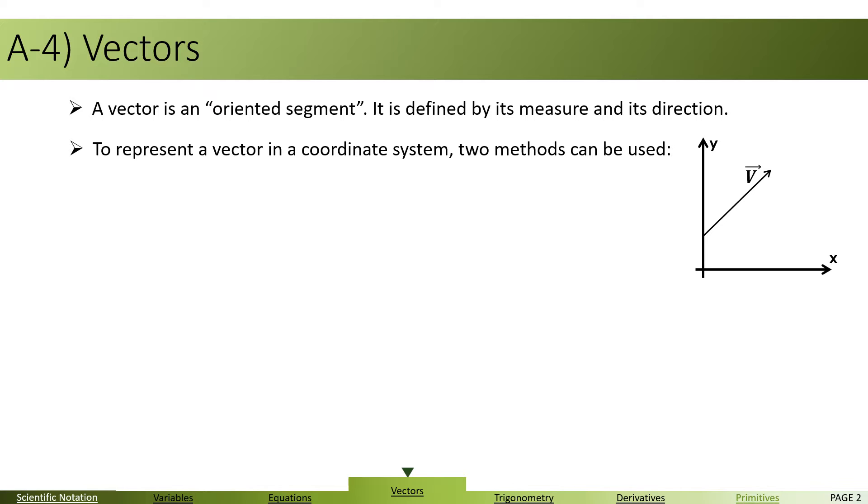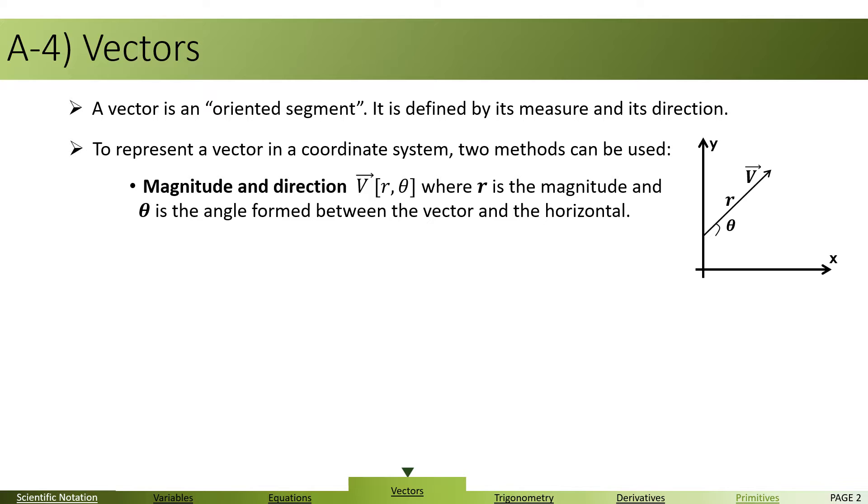To represent a vector in coordinate systems, two methods can be used. First, we can use the magnitude and direction form, in which we write V, the name of the vector, followed by R and theta written within brackets or large parentheses.